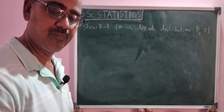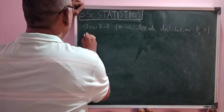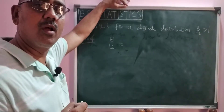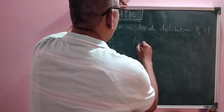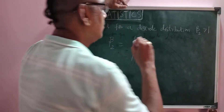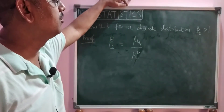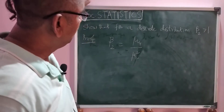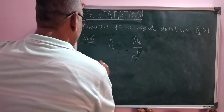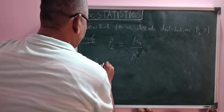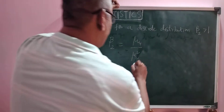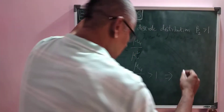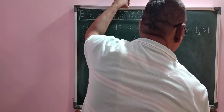To prove this, I consider the formula of beta 2. The formula of beta 2 is mu 4 by mu 2 square. We have to show that for a discrete distribution it is always greater than 1. So beta 2 greater than 1 means mu 4 by mu 2 square is greater than 1, which means mu 4 is always greater than mu 2 square.